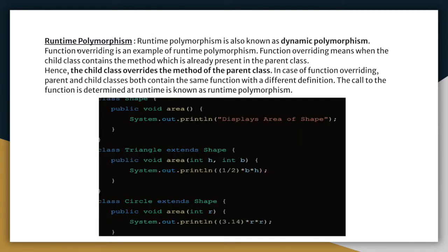Runtime polymorphism is also known as method overriding — it is dynamic polymorphism. Function overriding means a child class contains a method which is already present in the parent class. Here we have a Shape class with a method named 'area', and we are extending Shape to a Triangle class that also defines an 'area' method. This is called overriding. When we call 'area' on a Triangle object, it triggers the Triangle's area method — this is method overriding.